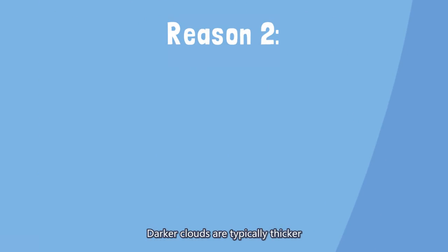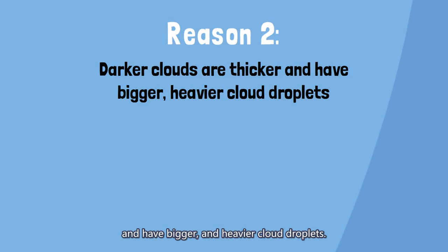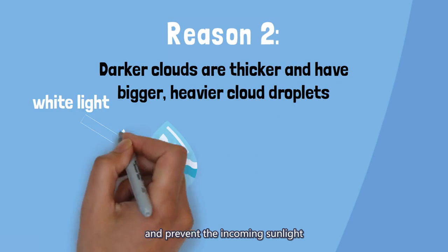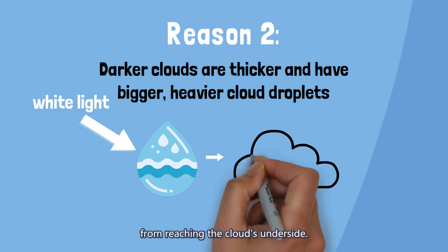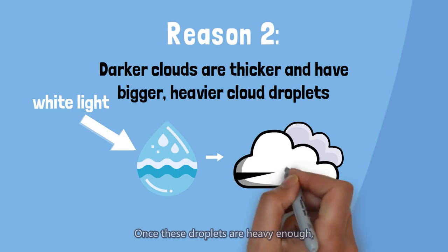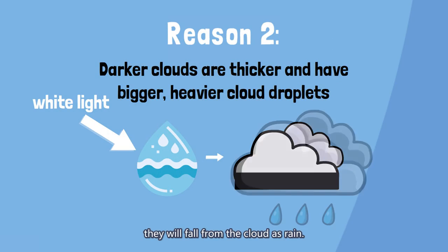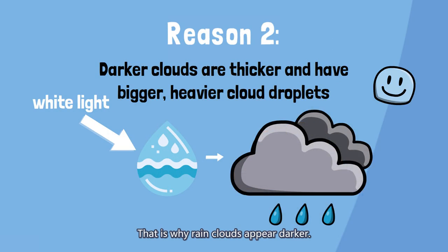Number two: darker clouds are typically thicker and have bigger and heavier cloud droplets. These larger droplets absorb light better and prevent the incoming sunlight from reaching the cloud's underside. Once these droplets are heavy enough, they will fall from the cloud as rain. That is why rain clouds appear darker.